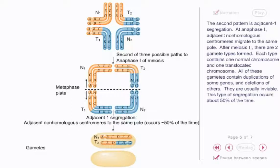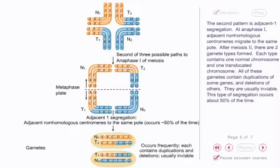Each type contains one normal chromosome and one translocated chromosome. All of these gametes contain duplications of some genes and deletions of others. They are usually inviable. This type of segregation occurs about 50% of the time.